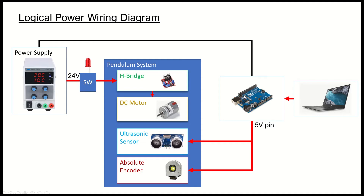The power wiring diagram shows where all the components are getting power from. The Arduino is getting power from the computer over the USB cable. The ultrasonic sensor and the absolute encoder are powered by the 5-volt pin of the Arduino. On the left-hand side there's a separate power supply providing 24 volts to the H-bridge, which then modulates power to the DC motor. You also need a ground connection between the power supply and the Arduino, because since you're communicating between the H-bridge and the Arduino, those grounds must be connected — otherwise the Arduino signals may not be recognized.